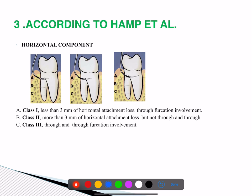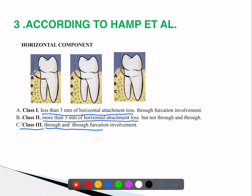The horizontal component of furcation involvement is measured with Nabers probe. Class 1 is less than 3 mm of horizontal attachment loss. Class 2 is more than 3 mm of horizontal attachment loss. Class 3 is a through-and-through furcation involvement.